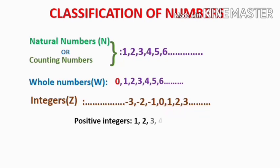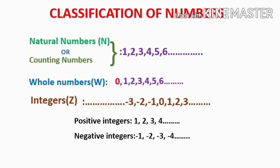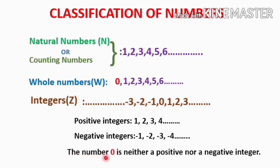The numbers 1, 2, 3, etc. are called the positive integers. Numbers minus 1, minus 2, minus 3, etc. are called the negative integers. You can see there is a number that is 0, which separates the negative integers and the positive integers. So the number 0 is neither a positive nor a negative integer.